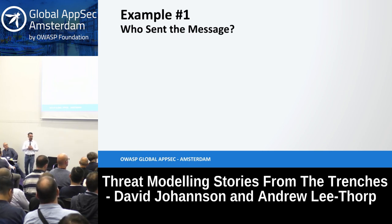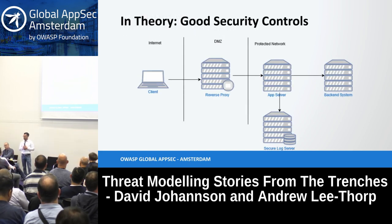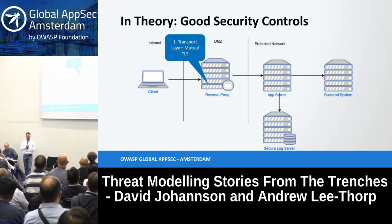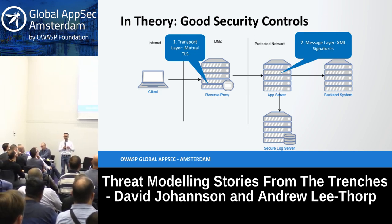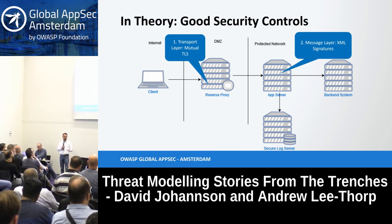The first example is about who sent the message. It concerns a system that on the surface had very good security controls and looked very secure. It was a classic multi-tier system with a client connecting to a perimeter system first. On the transport layer they had mutual TLS — a very strong form of client authentication. In addition, at the message layer they used XML signatures, with web service requests containing signed XML messages. So they had security controls at both the transport and message layers.